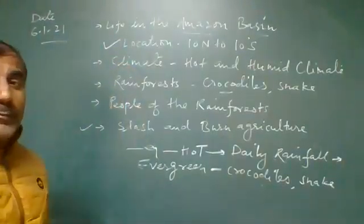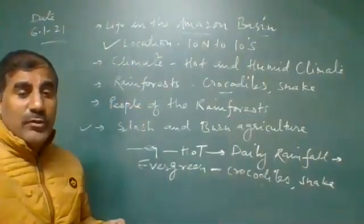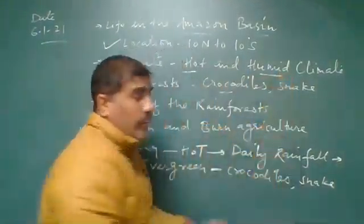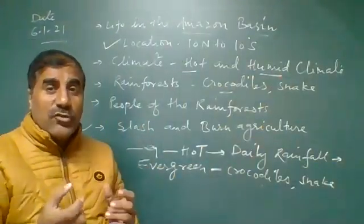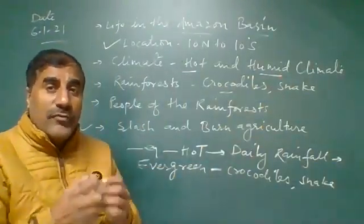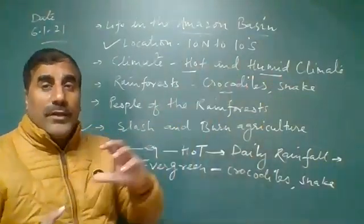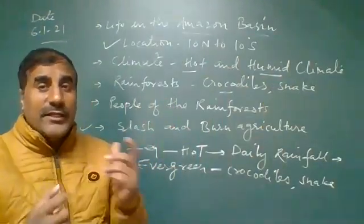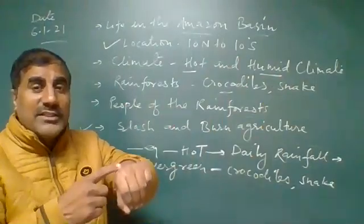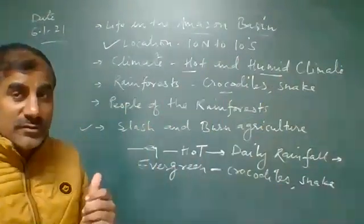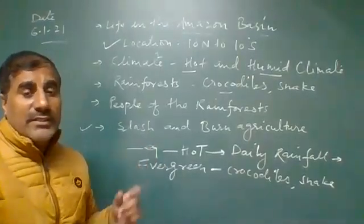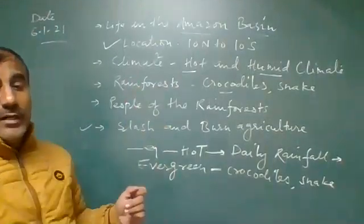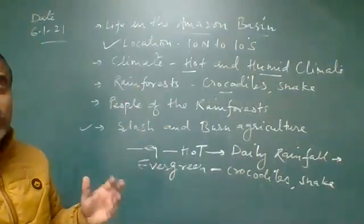Second point: climate. What type of climate is found in the Amazon Basin? Hot and humid climate is found there. Humid means there is more water present in the air, especially during the rainy season. That is known as humid climate. Hot and humid climate are found in the Amazon Basin, and it rains almost every day.